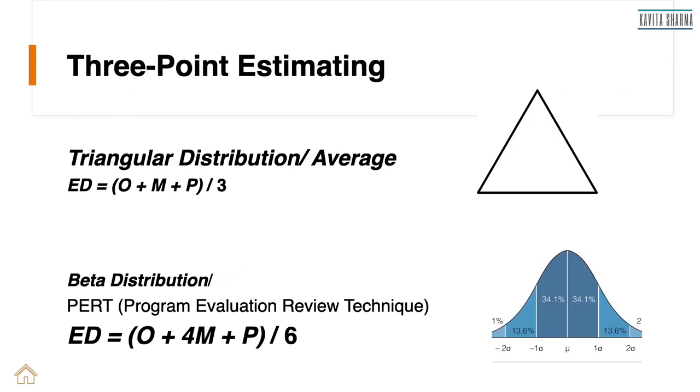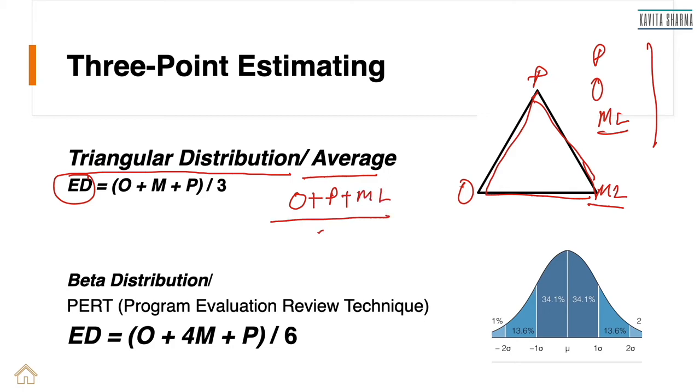The next one is three point estimate. These are, what are those estimates? We had pessimistic, we had optimistic and we had most likely. Now these are three point estimate. To arrive at expected duration or one estimate, it's called expected duration or expected cost. We can use two formulas. The first formula is triangular distribution or also called average distribution. What is it? Look at this triangle. We have, this is pessimistic, this is optimistic and this is most likely. Now to arrive at a formula, it's very simple. We say optimistic plus pessimistic plus most likely divided by three. And I arrive at the expected duration or expected cost.